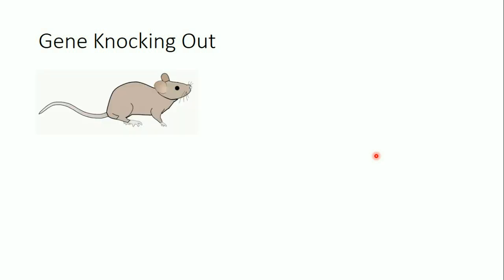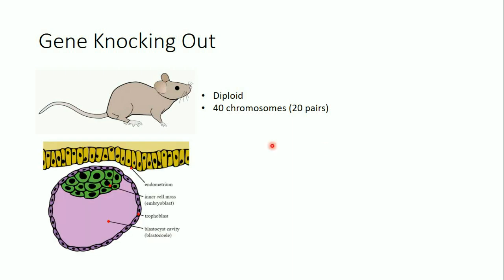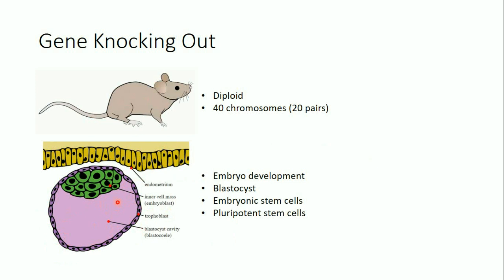How can we perform gene knocking out using the CRISPR-Cas9 technique? Let's say we have a mouse. You should know that the mouse is a diploid — it has 40 chromosomes and 20 pairs of chromosomes, very similar to humans, but humans have 46 chromosomes and 23 pairs. In the embryonic stage, there is something called the embryoblast and the blastocyst cavity.